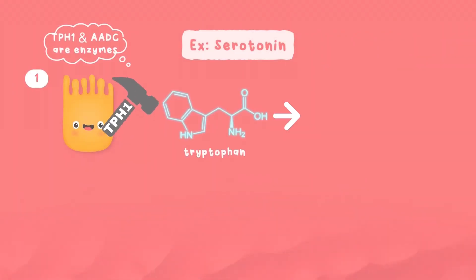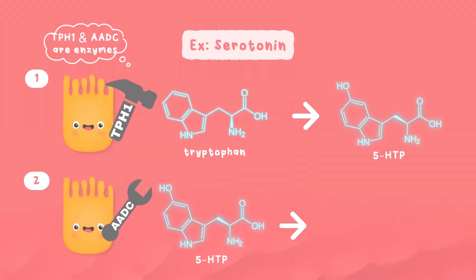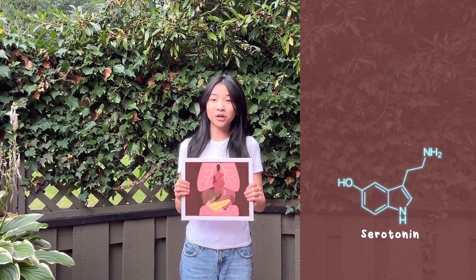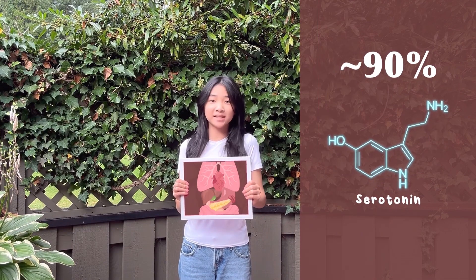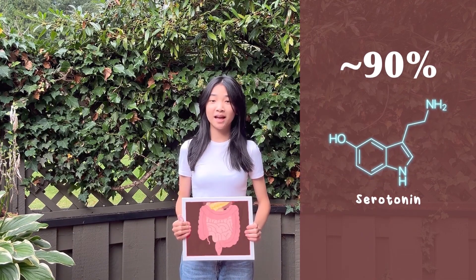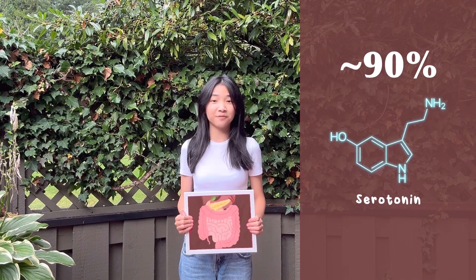Precursors are intermediate parts that gut cells may convert into the active neurotransmitter using enzymes. Remarkably, about 90% of the body's serotonin is made in the gut. Yep, your gut has a big say in feelings of happiness.